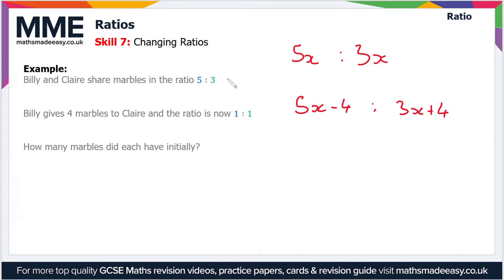Using the information in the question, we know this ratio is now 1:1. So the ratio we've just written, 5x - 4 to 3x + 4, equals 1:1.